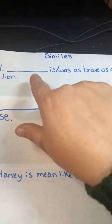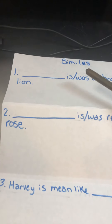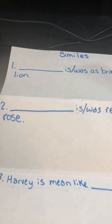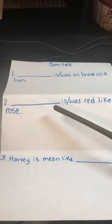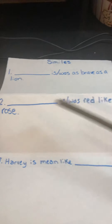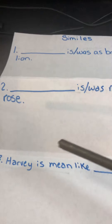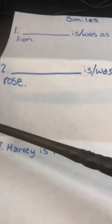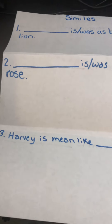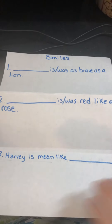This side is going to be the simile paper. You're going to have your first sentence which says 'blank is/was as brave as a lion.' You can use is for present tense, was for past tense. Find something that you can compare to as brave as a lion. Then 'blank is/was red like a rose' — you have to think of something to put in the blank that was red like a rose. And this one goes with our story: 'Harvey is mean like...' — so what does he mean like?